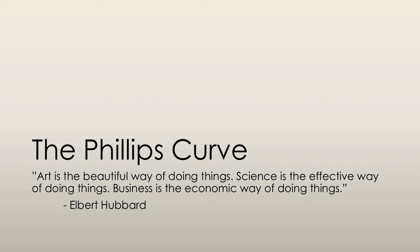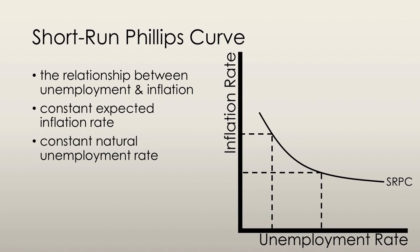The final part of this series is concerned with the Phillips Curve. The short-run Phillips Curve is the relationship between unemployment and inflation when the expected inflation rate and the natural unemployment rate are both held constant. It suggests that in the short-run there is a trade-off between inflation and unemployment.